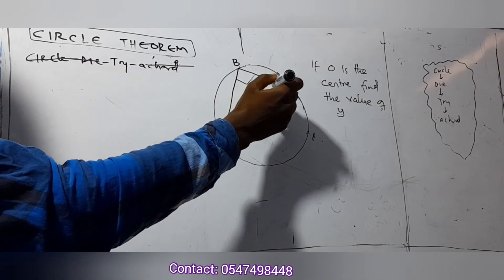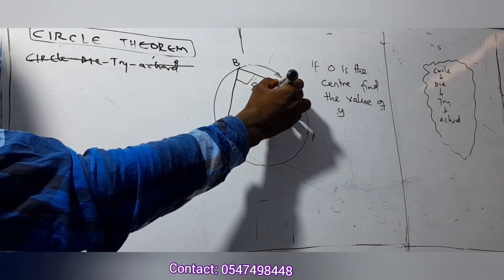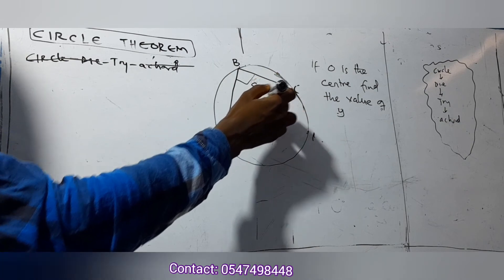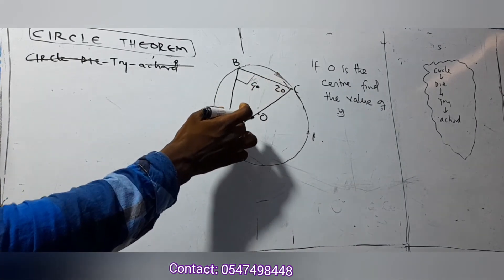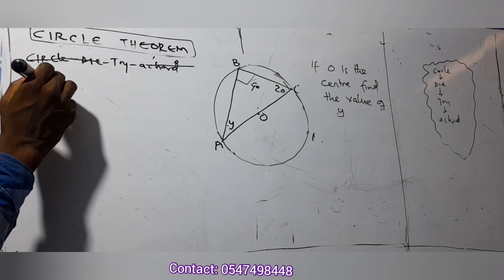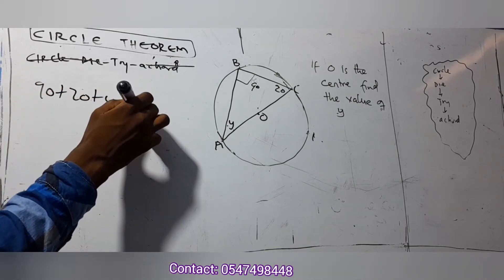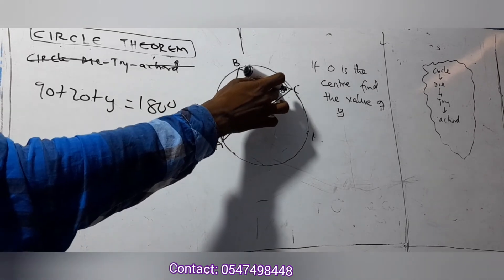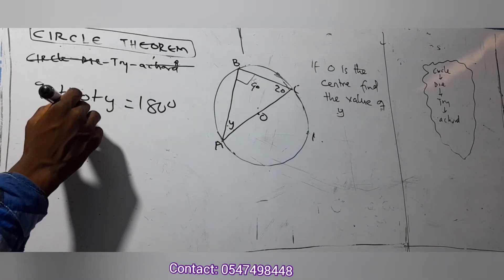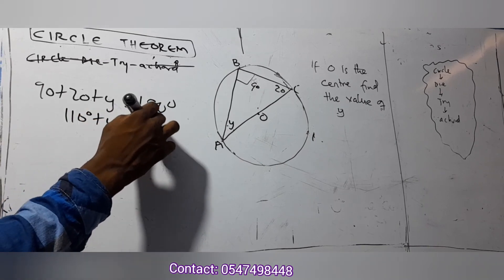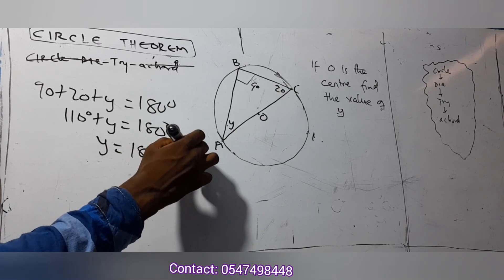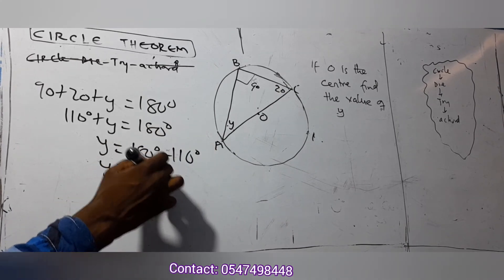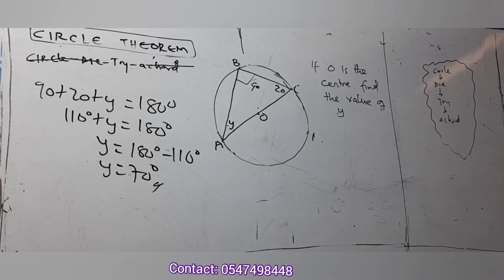So we have 90 degrees from the diameter and 20 degrees is given. There's no chord, but there is a triangle. All angles in a triangle add up to 180 degrees. So 90 plus 20 plus y equals 180. That gives 110 plus y equals 180, so y equals 180 minus 110, which is 70 degrees. And that's it for our y.